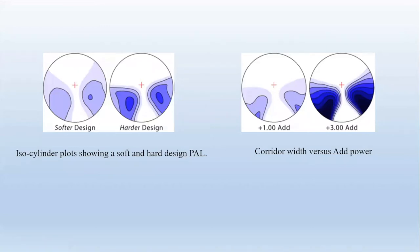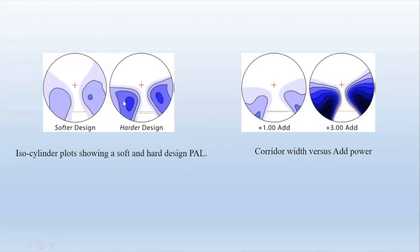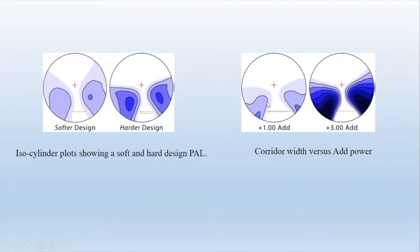This is important to know when solving problems with progressive lens wearers. With a softer design the corridor width is narrower compared to a harder design, which is slightly wider — but moving into the periphery the distortion is much greater with a harder design. With low adds the corridor is much wider than with a high add. These figures are just a guide to show the differences between corridor widths when compared to add powers, and hard versus soft designs.